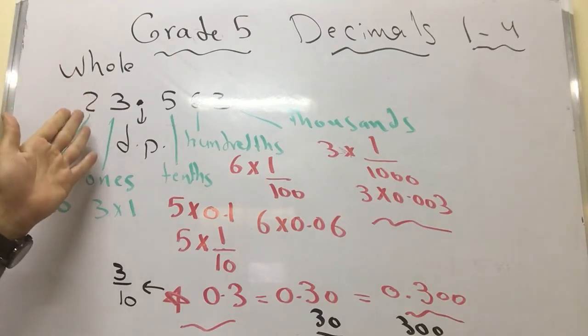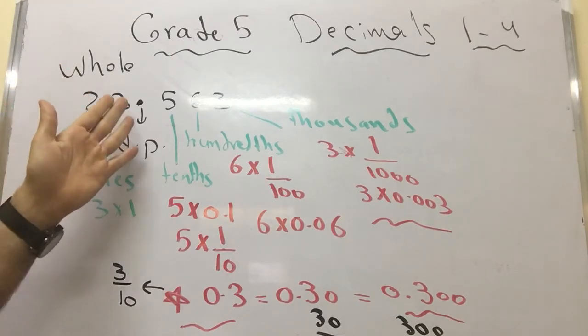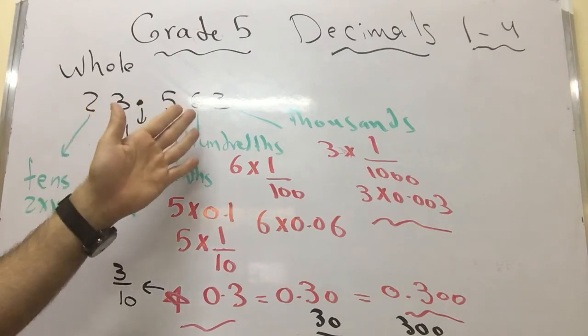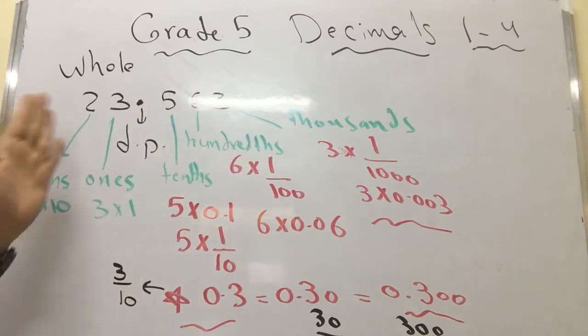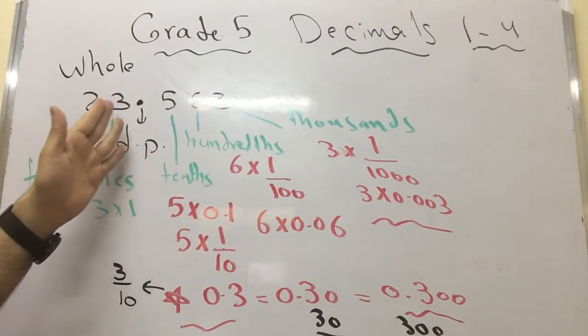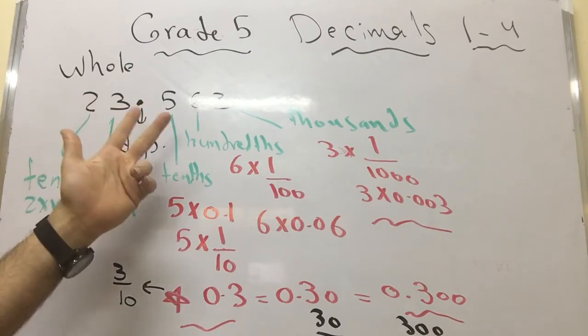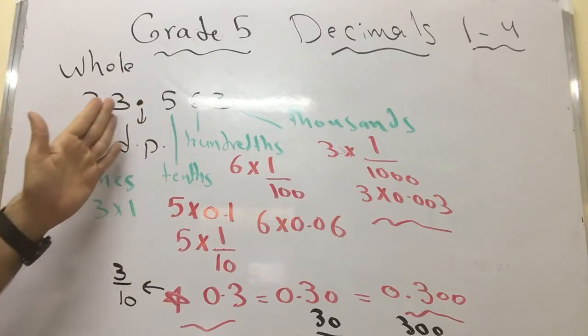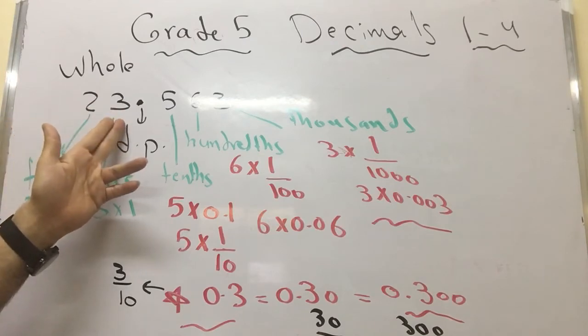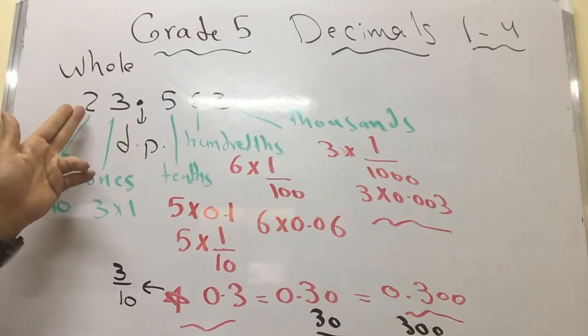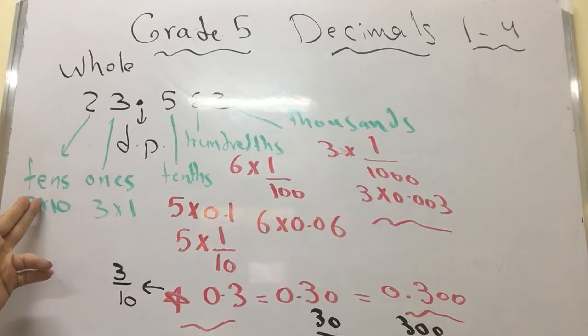Now if we look at this number 23.563, this number has two portions. The whole portion is 23. So this 2 is in the tens place, which means 2 multiply 10, and 3 is at the ones place, so it equals 3 multiply 1.